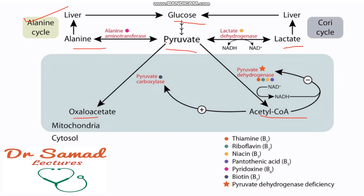Pyruvate can be converted into oxaloacetate in the liver with the help of an enzyme pyruvate carboxylase. Oxaloacetate can then be used for gluconeogenesis.